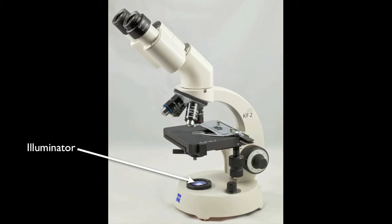The illuminator is located in the base. This is a light source together with lenses to direct the light up to the condenser underneath the stage.